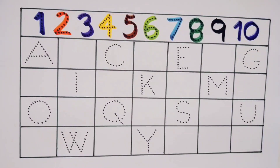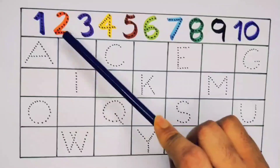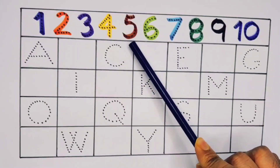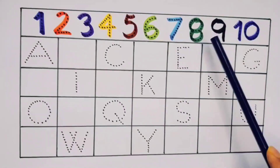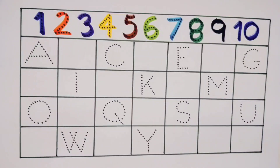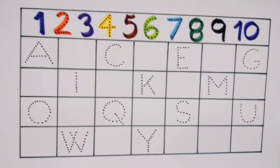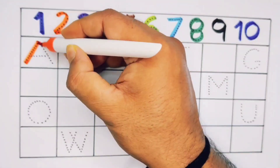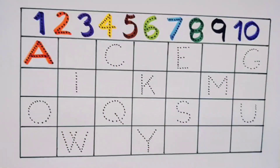What we learned: number one, number two, number three, number four, number five, number six, number seven, number eight, number nine, and ten. Now let's learn the alphabets. A — A for Ant.